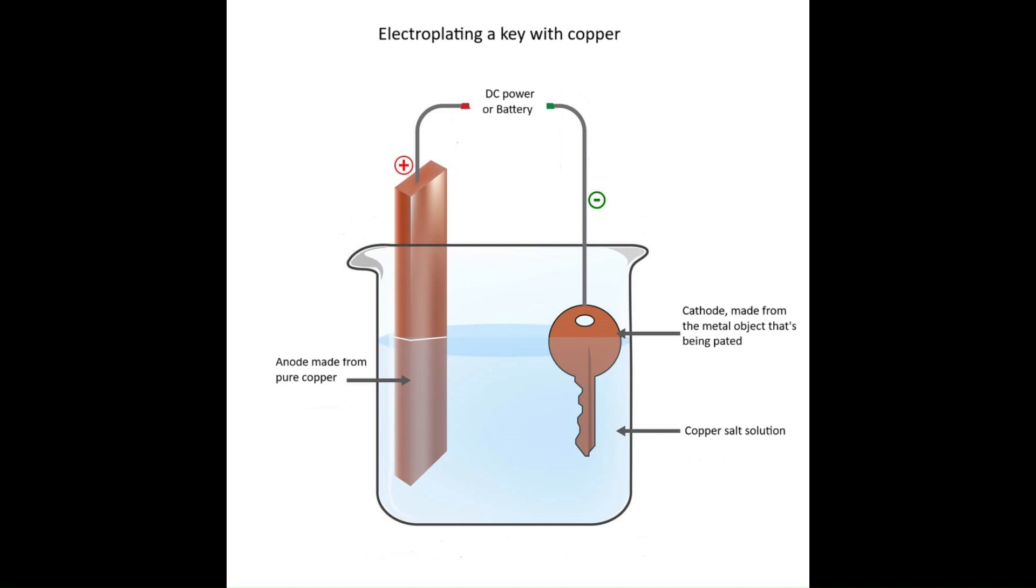These ions are attracted to the negatively charged cathode, the key. The copper ions gain electrons at the cathode and deposit onto the surface of the key, forming a thin, uniform layer of copper. So the longer the current is applied, the thicker the copper layer becomes.